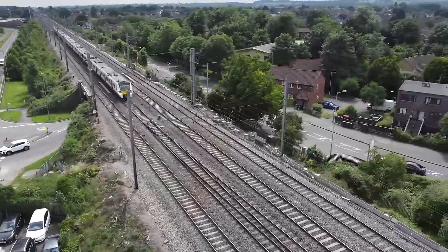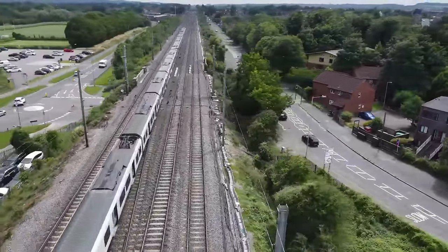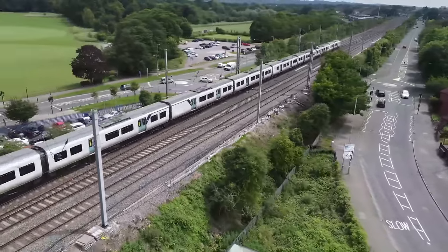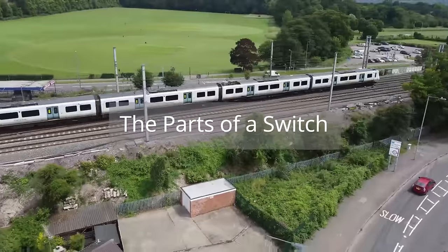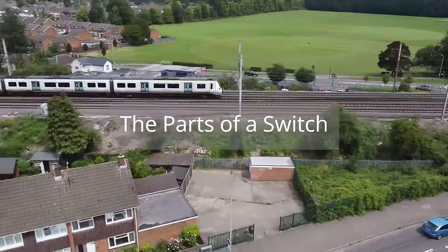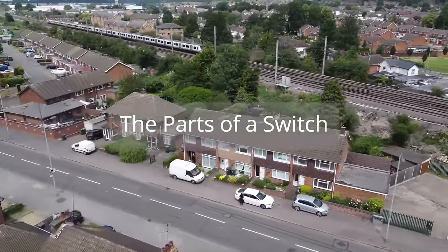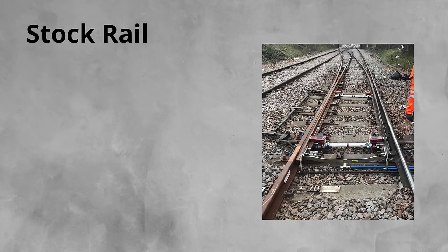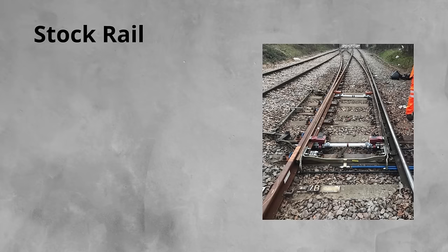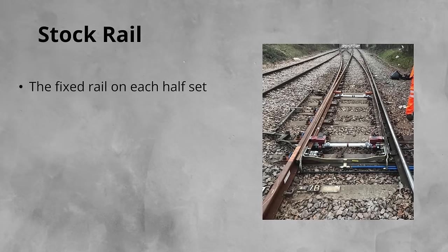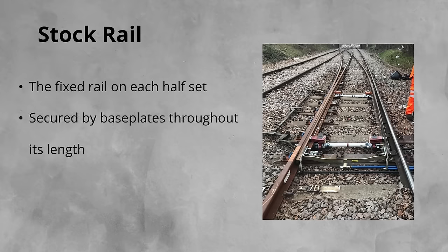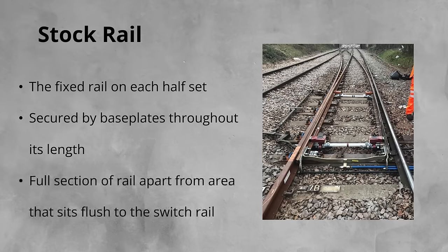Switches have a number of parts to them, which each have a name and a function. Let's take a tour of a switch, the different parts and what they do. Firstly, the stock rail. The stock rail refers to the fixed rail on each half set. It is welded into the track at either end, and is secured by base plates through the switches' length. It is a full section of rail, apart from through the area where the switch rail contacts, where some machining may have been done to ensure the switch can sit flush to the stock rail.